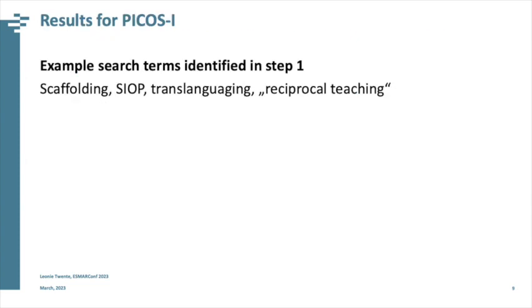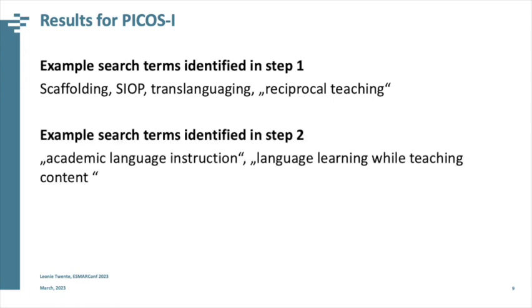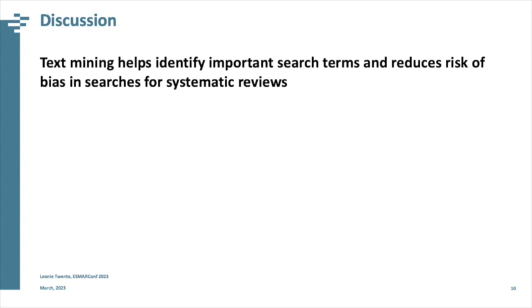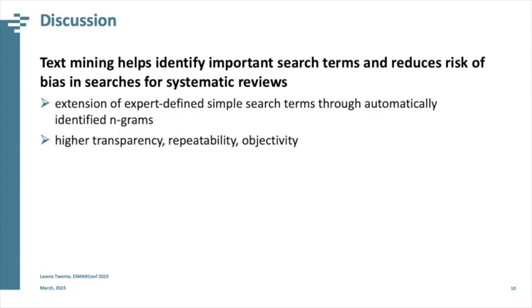In terms of the kinds of search terms identified at each step: step one found mainly terminology describing particular interventions such as scaffolding, SIOP, translanguaging, and reciprocal teaching. LitSearchR then added more general n-grams such as 'academic language instruction' and 'language learning while teaching content,' which were very representative of the literature we sought. We found that using text mining helped identify important search terms and reduce risk of bias in searches for systematic reviews in the education sciences.